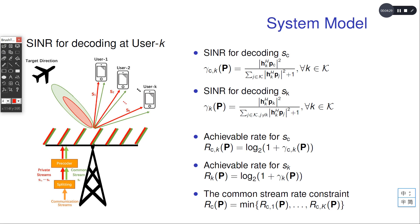Then we represent the signal to interference and noise ratio for decoding at user K as follows. When we decode the common stream, we treat the private streams as interference. And when we decode the private stream for user K, we treat the other private streams as interference.